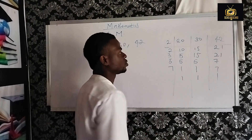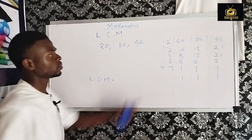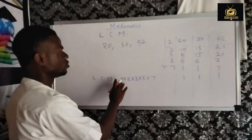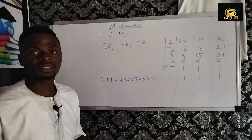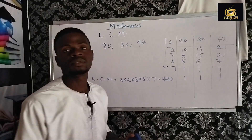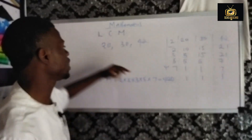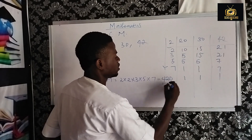We now multiply the prime numbers: 2 times 2 times 3 times 5 times 7. 2 times 2 gives 4, 4 times 3 is 12, 12 times 5 is 60, and 60 times 7 is 420. So the LCM of 20, 30, and 42 is 420.